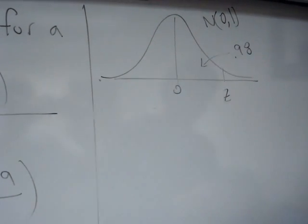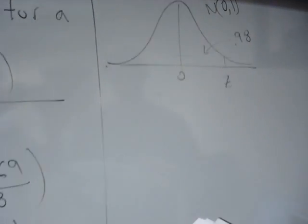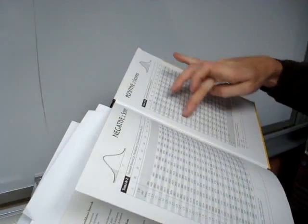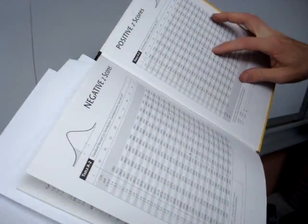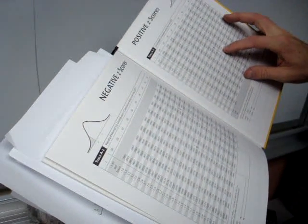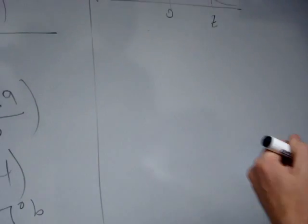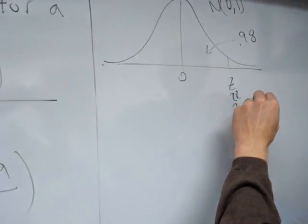And what we would do is open up a textbook. And we're looking for areas here in the middle of it. And it looks like the closest area is 0.9798. So that's 2.05. So this looks like at least approximately 2.05.